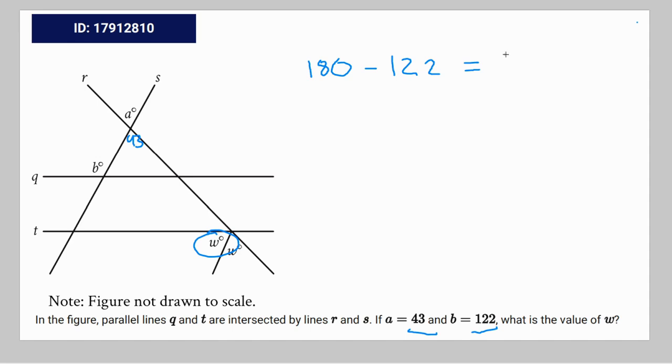And of course, the sum of all angles in a triangle is equal to 180. So this angle right here is going to be equal to 180 minus, in parentheses, 58 plus 43, which is 180 minus 101, which is equal to 79.